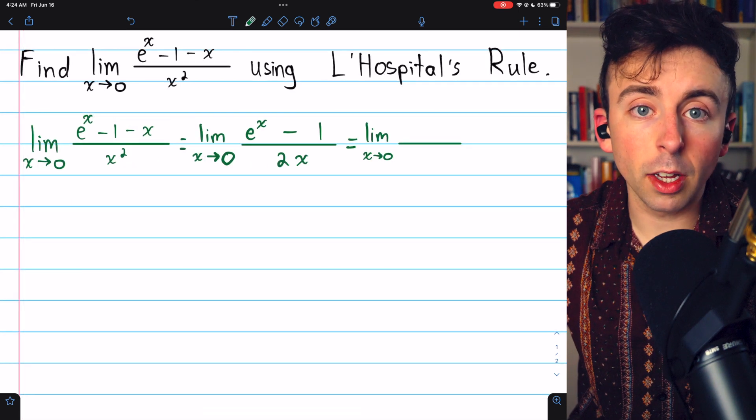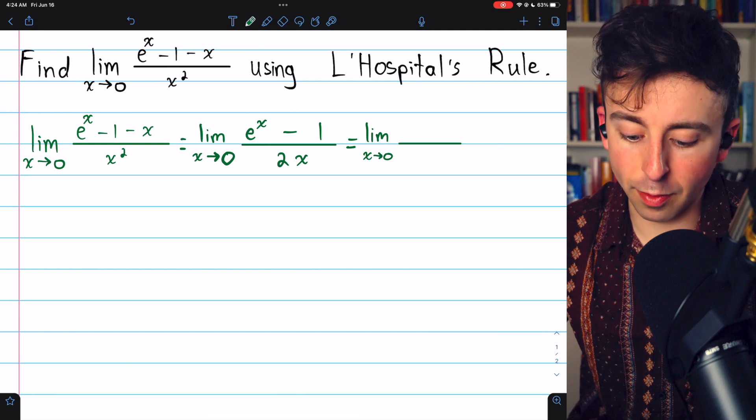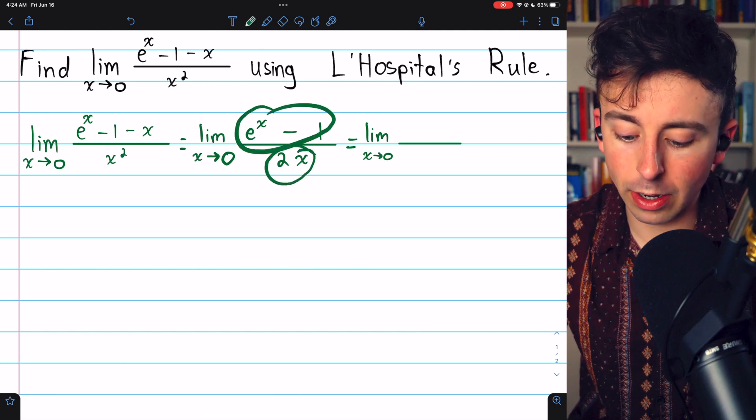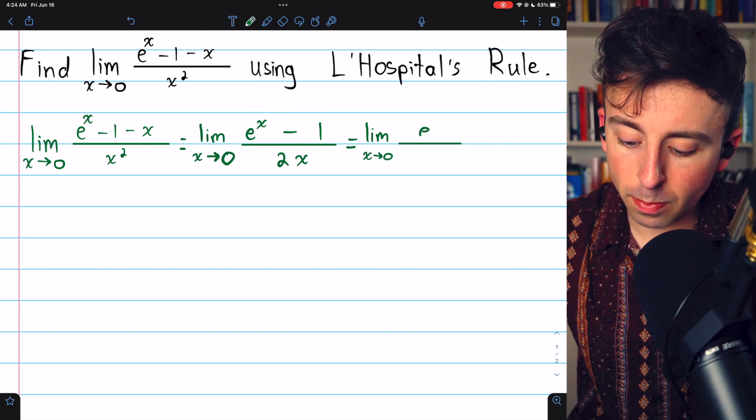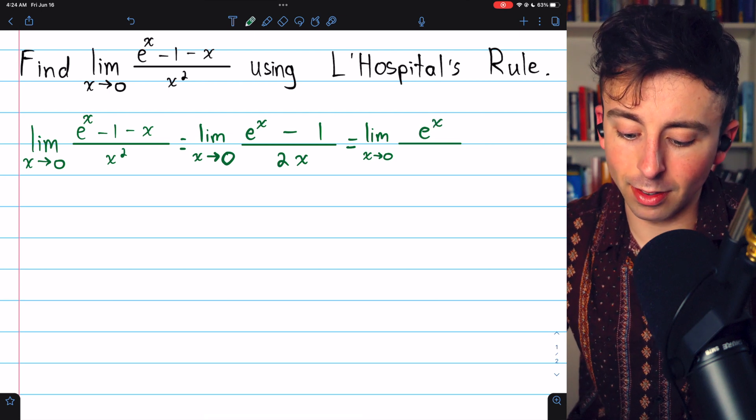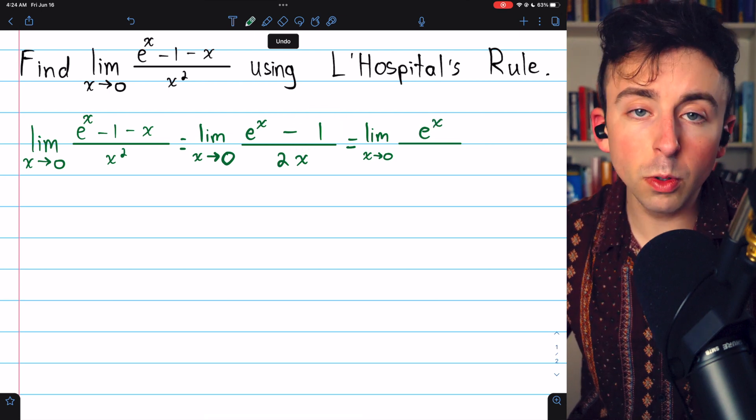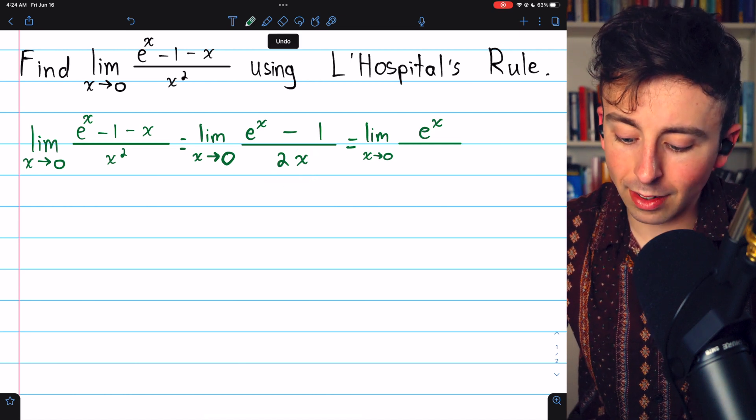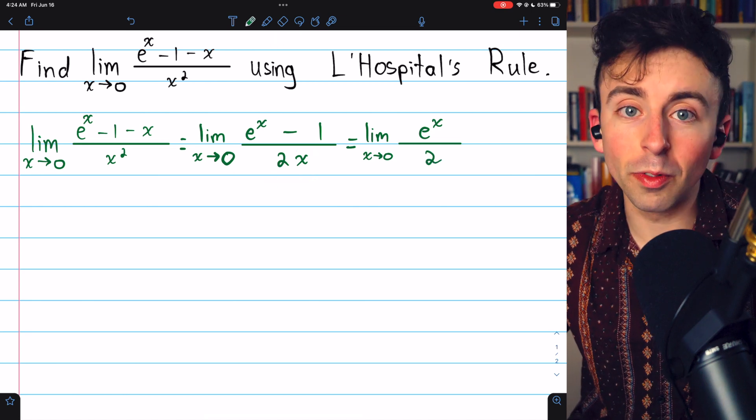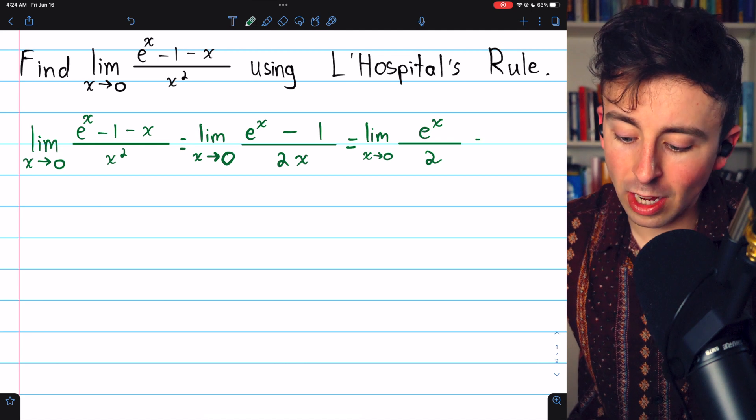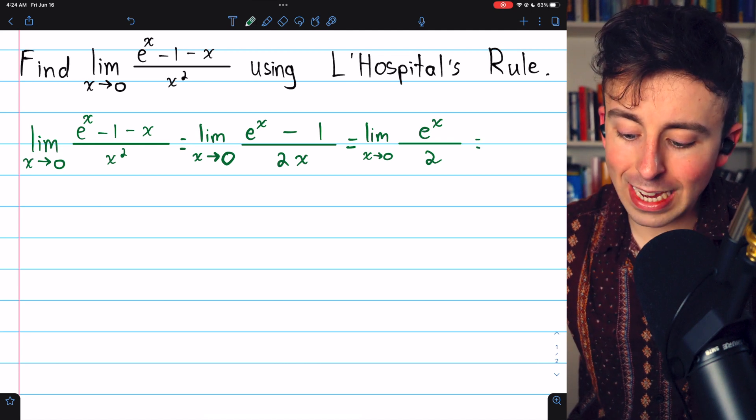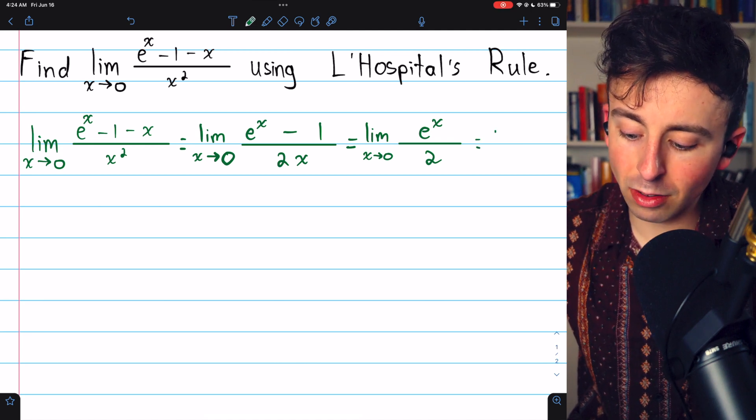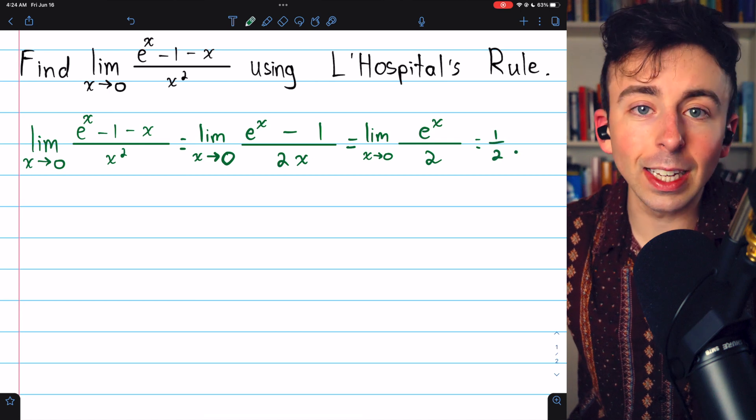If we apply L'Hospital's rule again, we again have to differentiate the numerator and denominator. The derivative of the numerator, this time, is just e to the x, because the only other part is minus 1, whose derivative is 0. In the denominator, the derivative of 2x is 2. So, we finally have something we can evaluate. We can plug in 0 now. e to the 0 over 2 is 1 over 2, so the limit is 1 half.